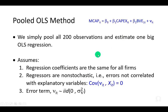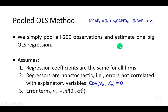Doing this assumes that the regression coefficients — that is, the intercept beta sub zero and the slopes beta sub one and beta sub two — are all the same for all firms. In other words, the manner of relationship between CapEx, together with book value, and market capitalization is the same for all firms.